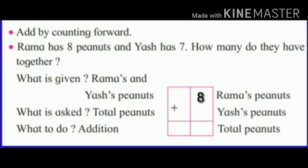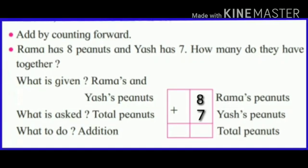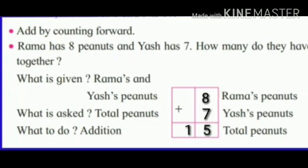Rama has 8 peanuts, so write here 8. And Yash has 7 peanuts, so write here 7. Count 7 fingers forward from 8. The answer will be 15. So, here total peanuts 15.